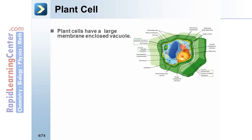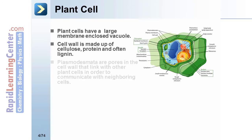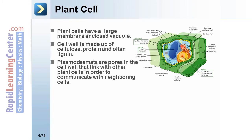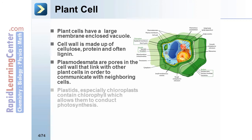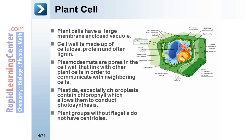Plant cells have a large membrane-enclosed vacuole. The cell wall is made up of cellulose, protein, and often lignin. Plasmodesmata are pores in the cell wall that link with other plant cells in order to communicate with neighboring cells. Plastids, especially chloroplasts, contain chlorophyll, which allows them to conduct photosynthesis. Plant groups without flagella do not have centrioles.